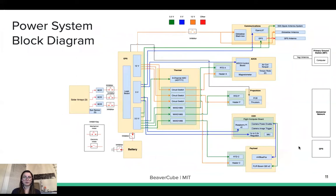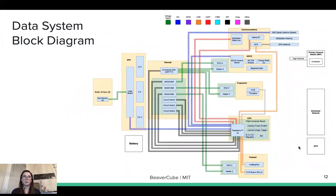In BeaverCube, we are developing not only the payload and propulsion, but also all the other components of the CubeSat. For example, the power subsystem is mostly composed of three solar arrays, the entire power board, and the batteries. This is shown in a high-level block diagram of what we are developing in the satellite. We also have a high-level data diagram, since we are doing the command and data handling with our own board, using mostly two Raspberry Pis for computing.